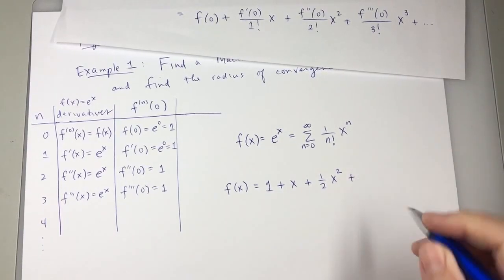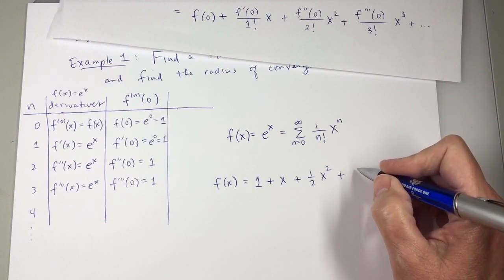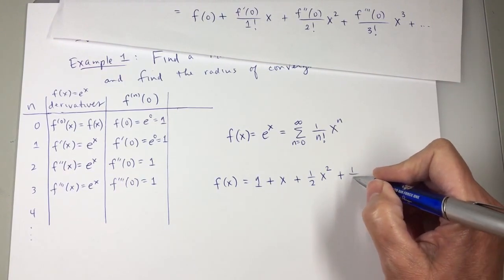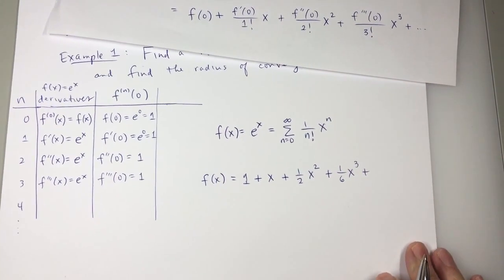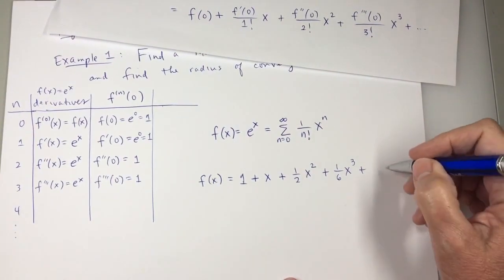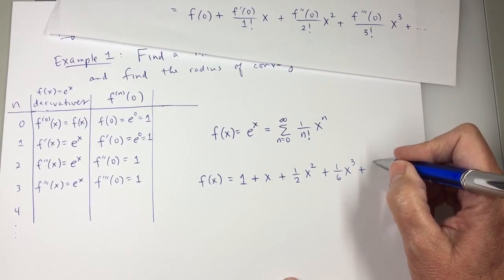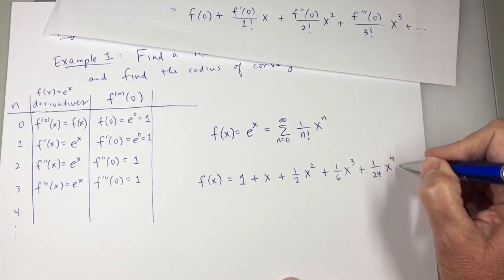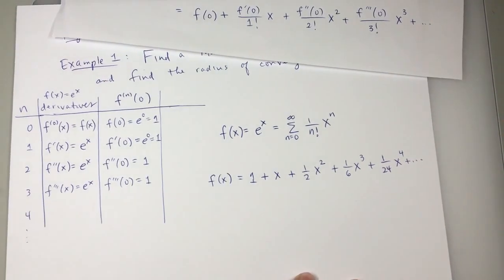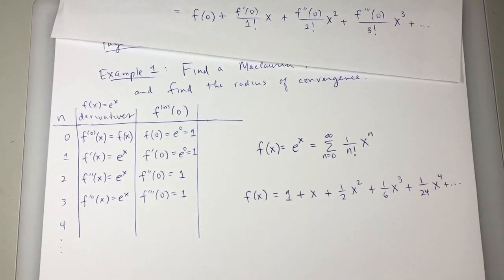When n is 3, 3 factorial is 6, 1/6 x cubed. When n is 4, 4 factorial is 24, 1/24th x to the 4th. So there is the Maclaurin series for this function e to the x.